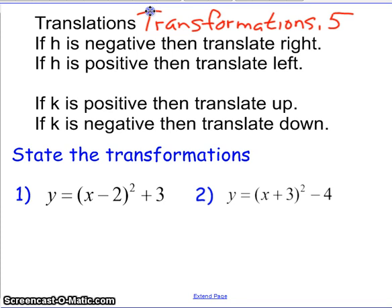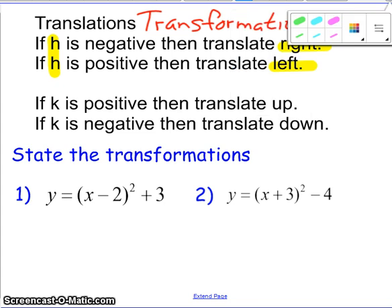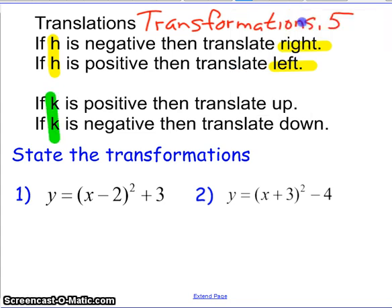So we've got our H and our K in vertex form, and H is going to describe left and right movements. So H is going to describe either a right or a left. K is going to describe an up or a down. So K is going to describe either an up or a down.